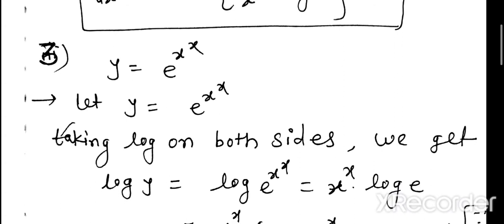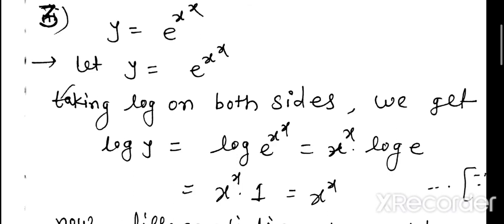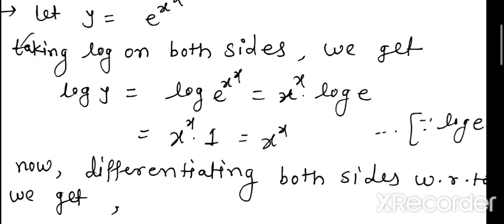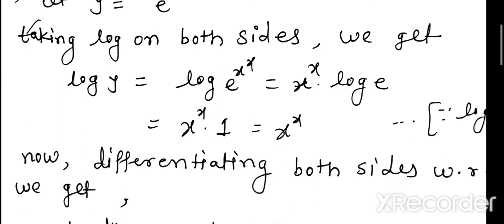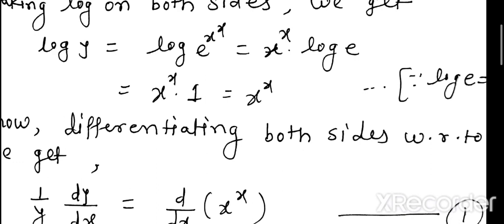The third example is y equals e to the power x to the power x. As usual, taking logarithm on both sides: log y equals log of e^(x^x). The index x^x comes to the left side, giving x^x · log e. Since log e equals 1, this simplifies to log y equals x^x.